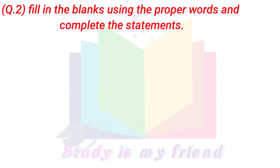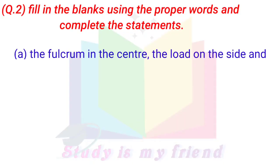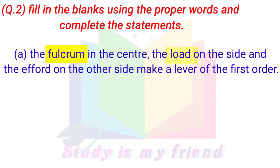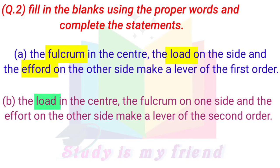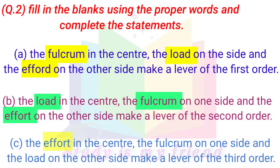Question 2. Fill in the blanks using the proper words and complete the statements. A. The fulcrum in the center, the load on one side and the effort on the other side make a lever of the first order. B. The load in the center, the fulcrum on one side and the effort on the other side make a lever of the second order. C. The effort in the center, the fulcrum on one side and the load on the other side make a lever of the third order.